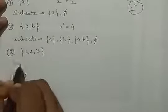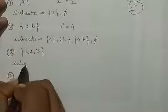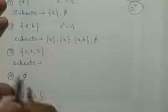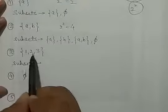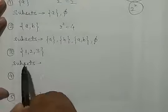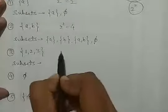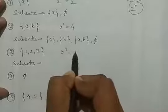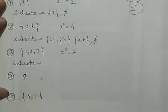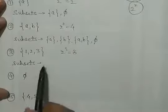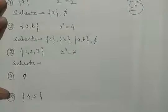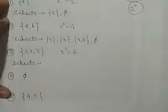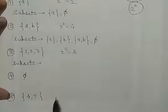The next one — how many elements are there: 1, 2, and 3. So 2 to the power 3 is equal to 8, it means if one writes the subsets, then the number of subsets will be 8.